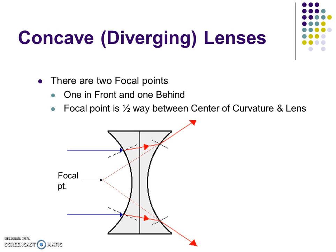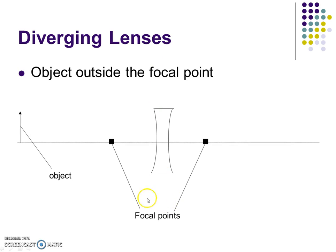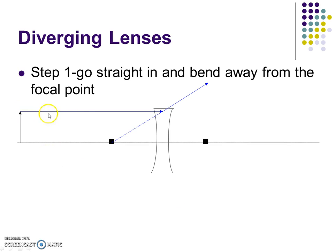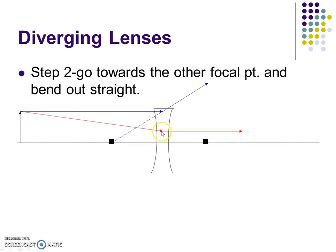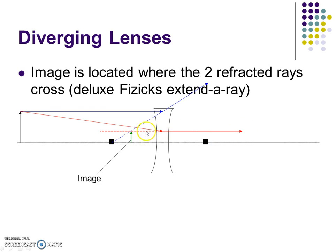Same relationship as the other lens. Let's draw this one. Place the object — draw it nice and large because the image is going to be small. Draw your lens and place your two focal points equidistant away. Step one: go straight in and bend away from the focal point. Extend this out and then bend away. Step two is just the opposite: aim towards the focal point but stop at the lens, then come out straight.